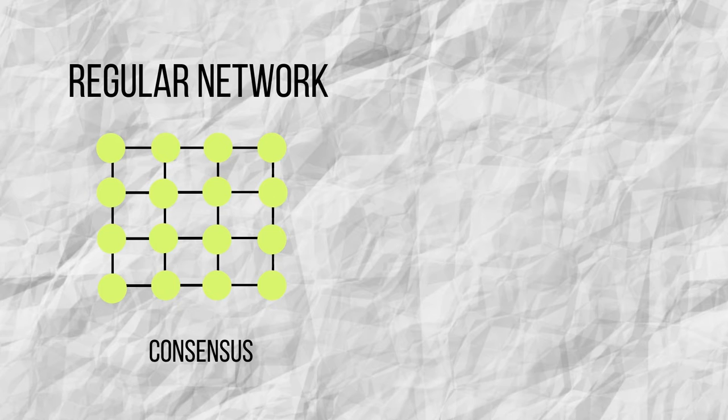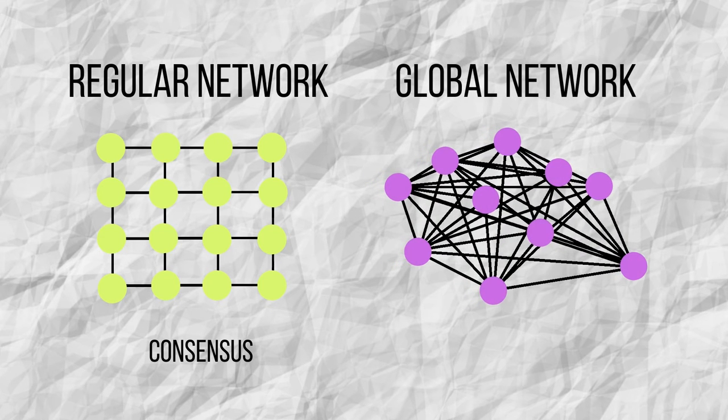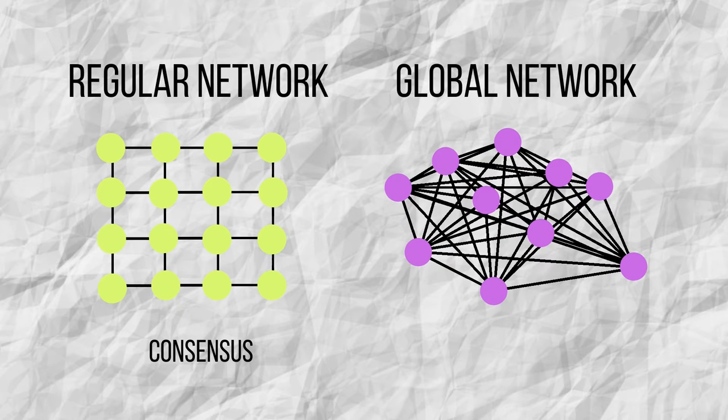On the other hand, if everyone interacts with everyone else, we might think that it is easier to reach a consensus. However, the result is counterintuitive. In a fully connected network in which everyone is connected to everyone else, there is always coexistence of options for large enough systems.